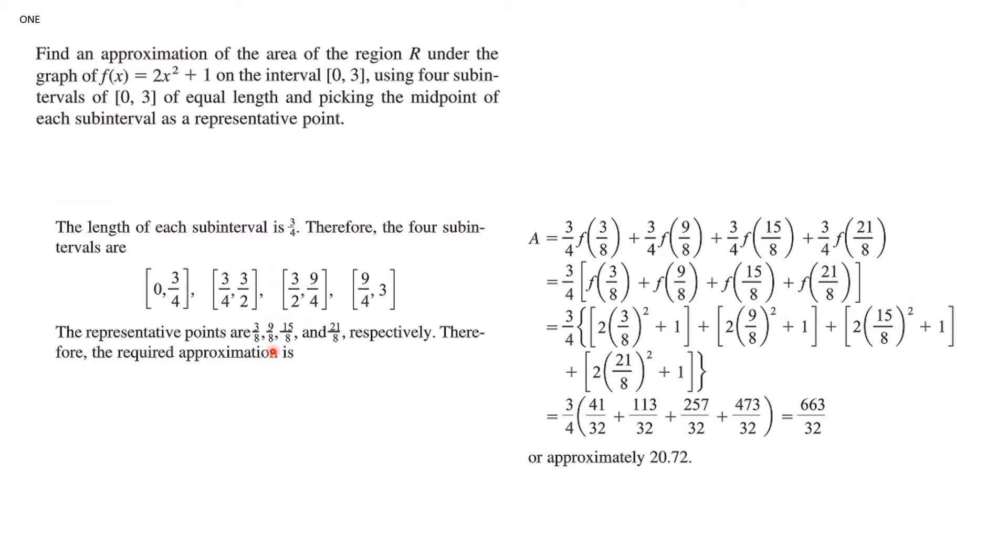So it would be 3 over 8, 9 over 8, 15 over 8, and 21 over 8 respectively. Therefore, the required approximation is given by this sum of rectangles. You substitute the values in to the function, do the calculation, and you get 663 over 32, or approximately 20.72.